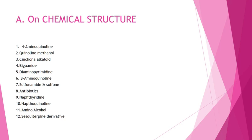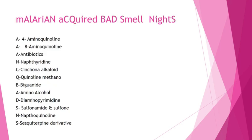To remember these 12 classes, we have the mnemonic: MALARIAN ACQUIRED BAD SMELL NIGHTS. In MALARIAN, there are three A's: the first A stands for four-aminoquinoline, the next A is eight-aminoquinoline, A is antibiotics, and N stands for naphthyridine.